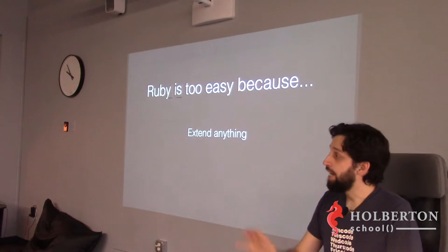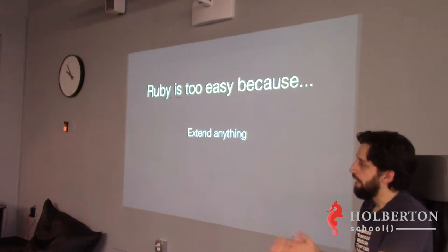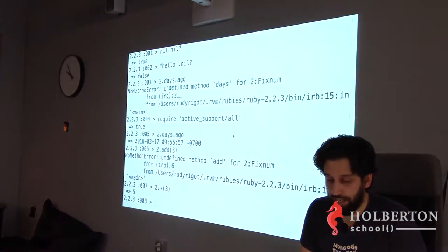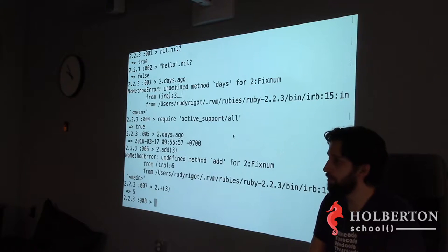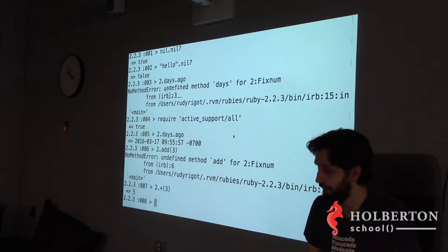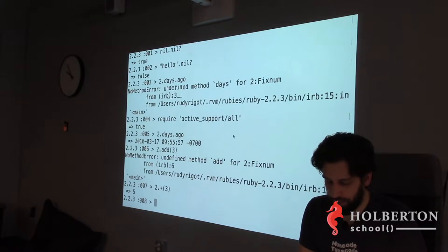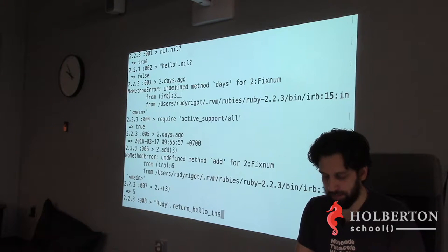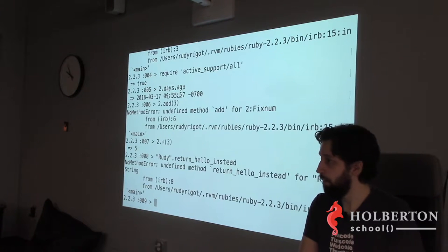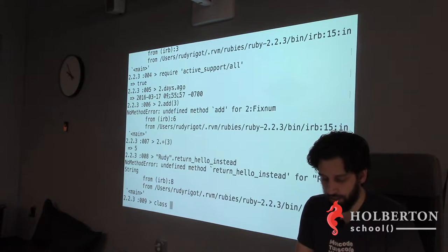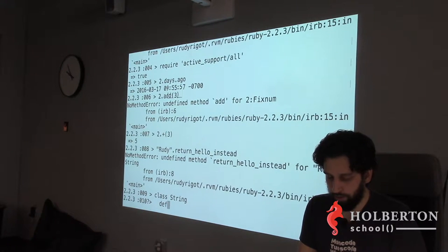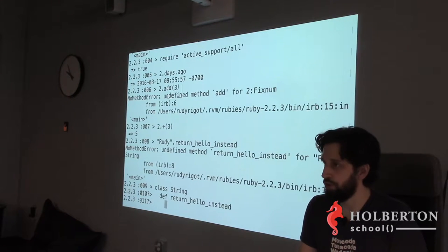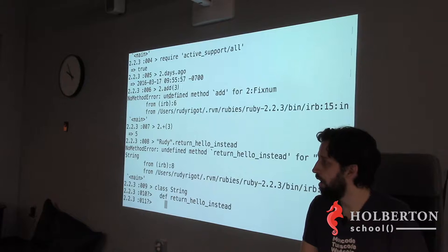Everything that's not 100% necessary is optional. And you can extend absolutely anything — any type that already exists, you can add new functions to it. For instance, if you want a function that takes a string like 'Rudy' and returns 'hello instead,' it doesn't exist, but you can create it. Inside `class String`, define a method `def return_hello_instead` and return `'hello'`.